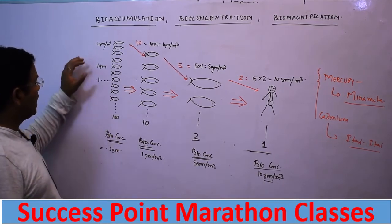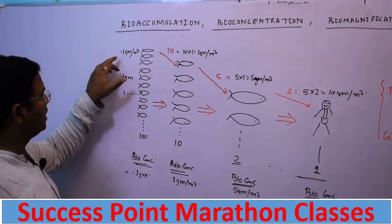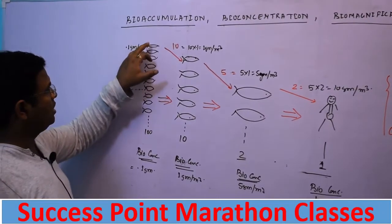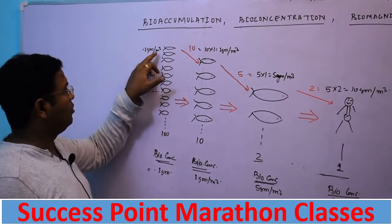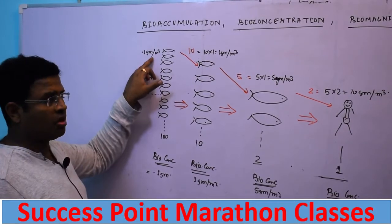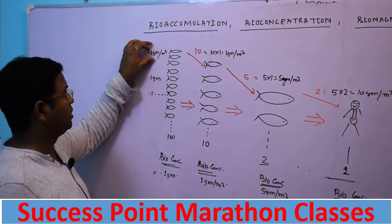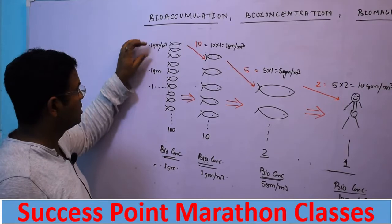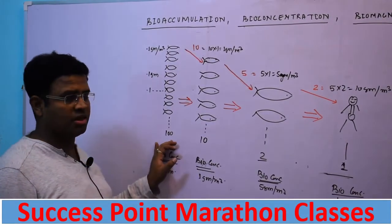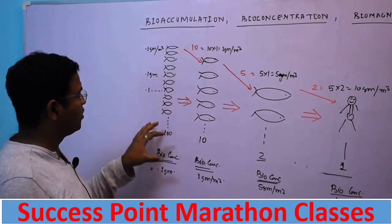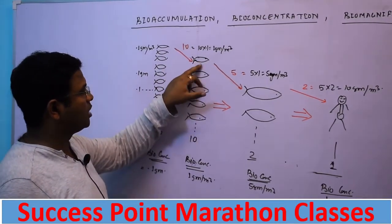These non-degradable substances are eaten by smaller fish. In each smaller fish, there is a concentration of 0.1 gram per meter cube of the non-degradable chemical substance. Suppose there are 100 small fish, and one bigger fish has eaten 10 of these smaller fish.